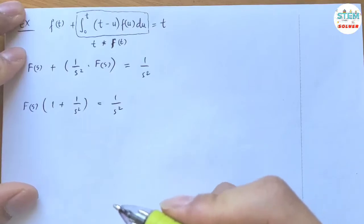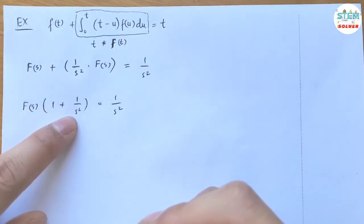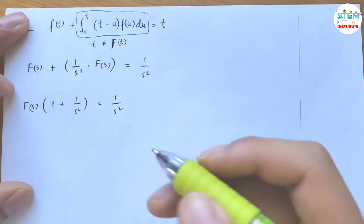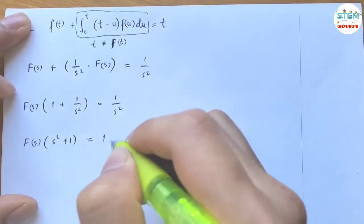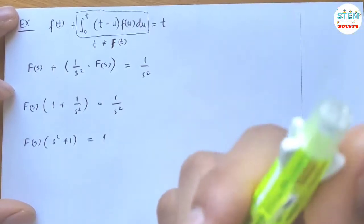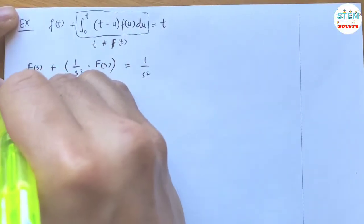And to get rid of the s squared, I'm going to multiply both sides by s squared. So on the left side I have s squared times s squared plus 1 equals 1. So let me write it down here, multiply both sides by s squared.